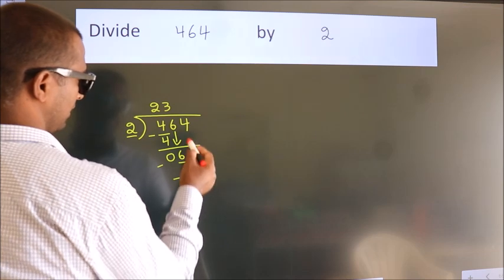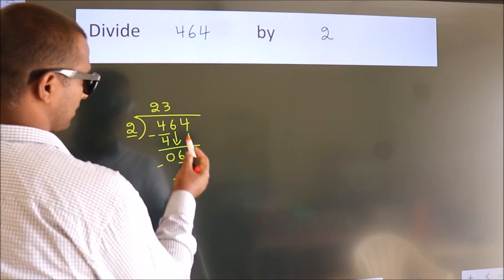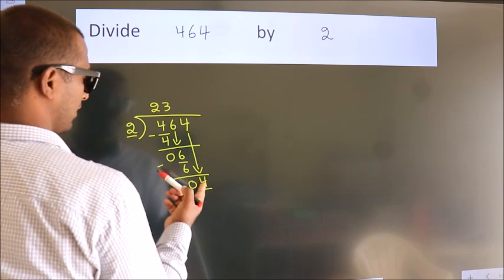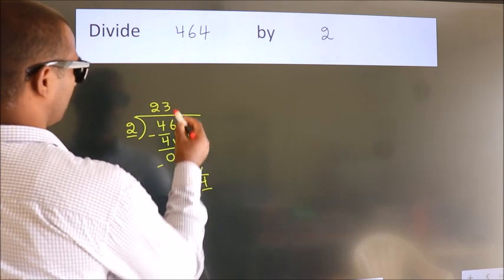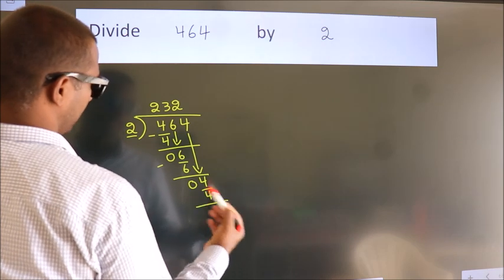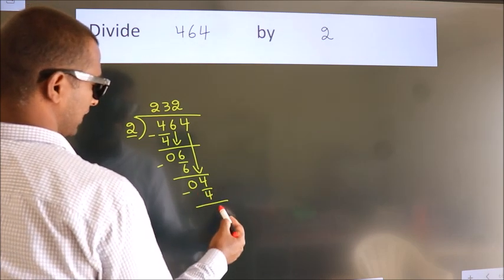After this, bring down the beside number. So 4 down. So 4. When do we get 4? In 2 table. 2 2's 4. Now we subtract. We get 0.